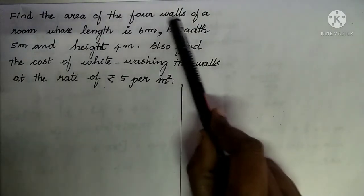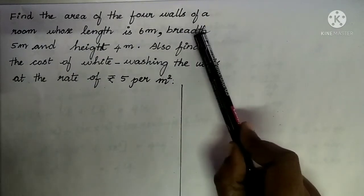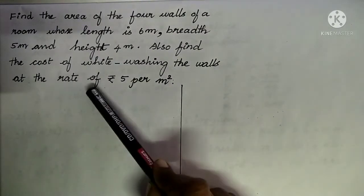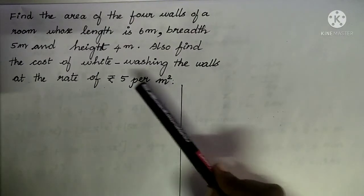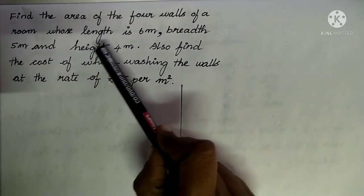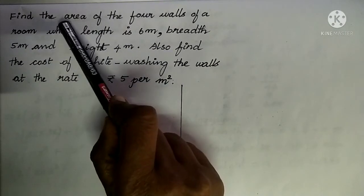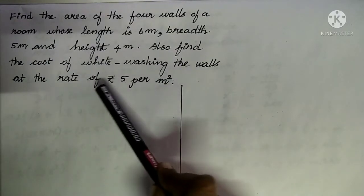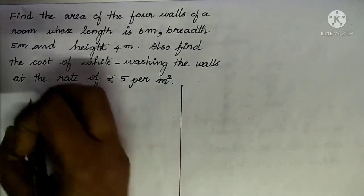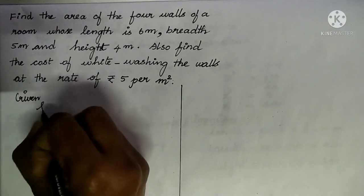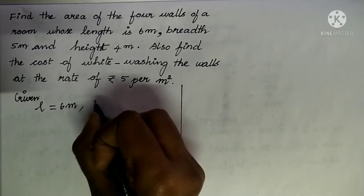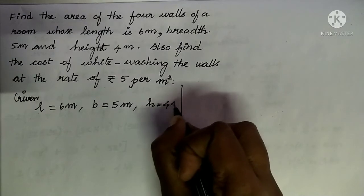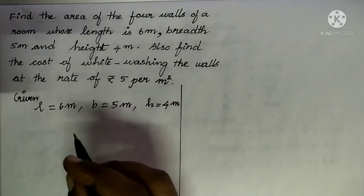Question number 5. Find the area of the four walls of your room whose length is 6 meters, breadth is 5 meters, and height is 4 meters. Also find the cost of whitewashing the walls at the rate of rupees 5 per meter square. We are given length 6 meters, breadth 5 meters, and height 4 meters. Using these dimensions, we will first find the area of the four walls.